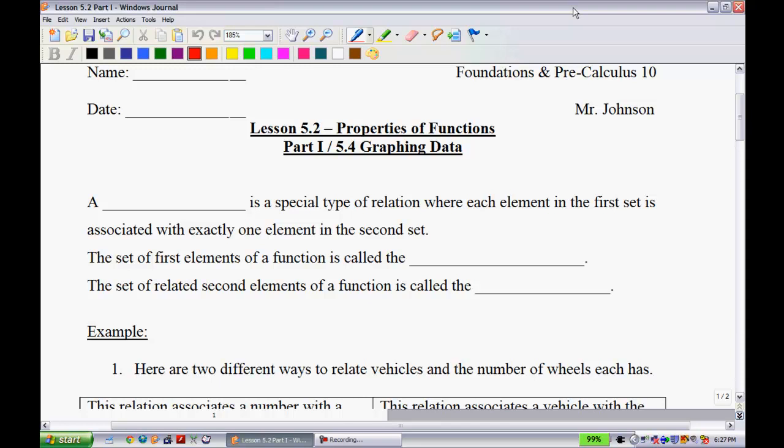So you'll have to watch both of them for this section. A function, one of my favorite words because you can't say function without saying fun, is a special type of relation where each element in the first set is associated with exactly one element in the second set. The set of first elements of a function is called the domain. The domain are essentially your x values, and we can define these even further and say that they're your independent values. The set of related second elements of the function is called the range, and the range is represented as y values. And if the domain is independent, these then are your dependent values or variables.